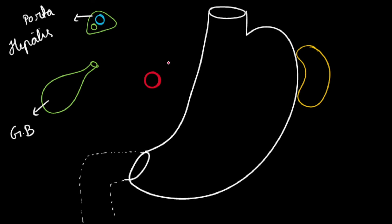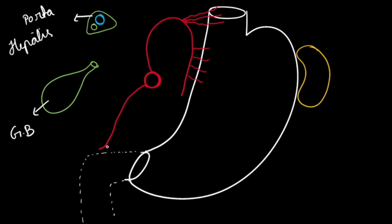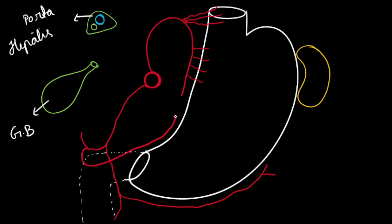Quick recap: the smallest branch of the celiac trunk is the left gastric artery, which gives esophageal branches at the cardiac end of the stomach and gastric branches to the lesser curvature. The common hepatic artery moves up to the upper border of the duodenum, gives the gastroduodenal artery, which divides into the superior pancreaticoduodenal artery and right gastro-epiploic artery. The common hepatic artery then divides into the proper hepatic artery and right gastric artery; the right gastric artery anastomoses with the left gastric artery along the lesser curvature.